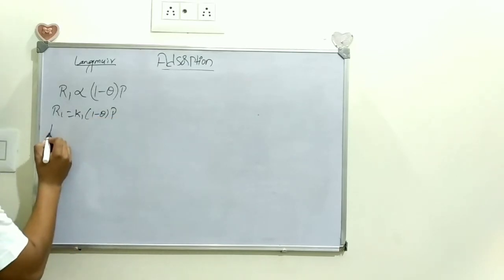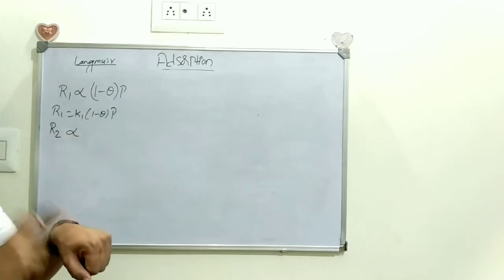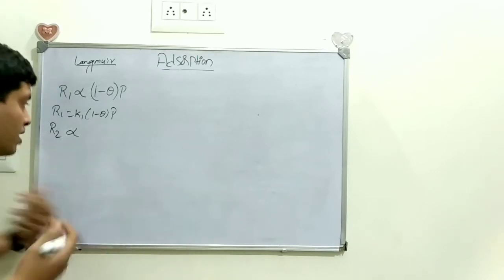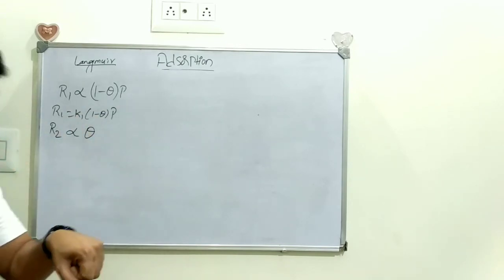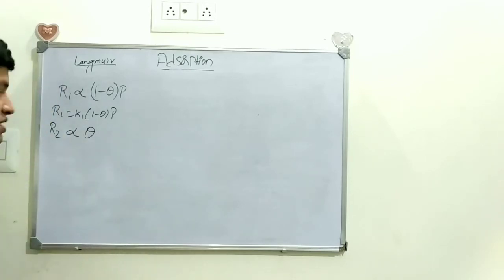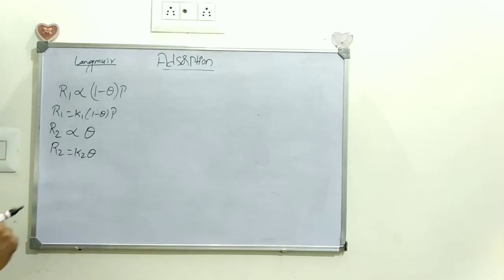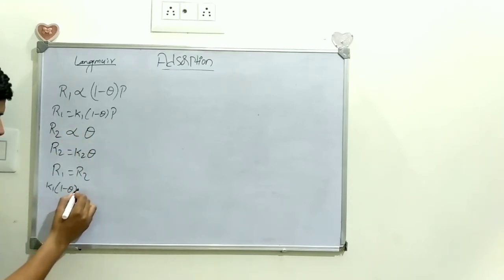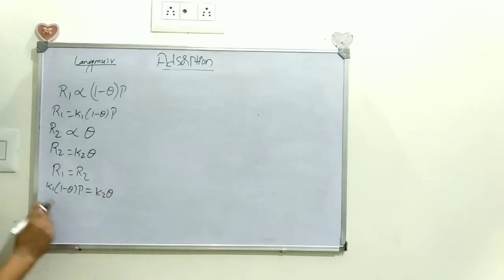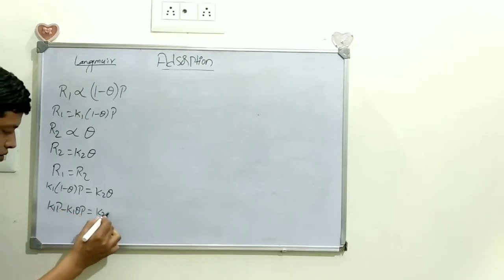Rate of desorption R2 is directly proportional to the number of sites occupied. We do not include pressure here because just leaving the pressure, the molecules will come out on their own. Removing the proportionality constant and putting desorption constant K2, we get R2 = K2θ. At equilibrium, adsorption equals desorption, so R1 = R2: K1(1 − θ)P = K2θ. Multiplying out: K1P − K1θP = K2θ.